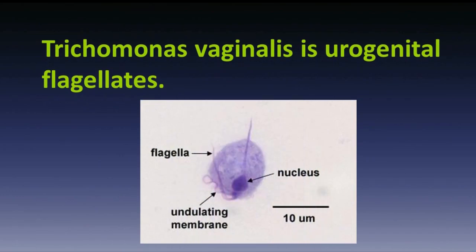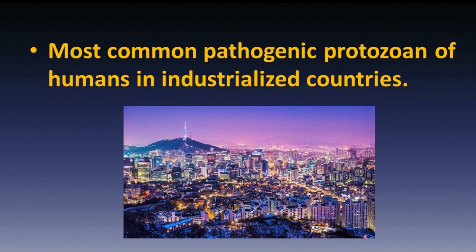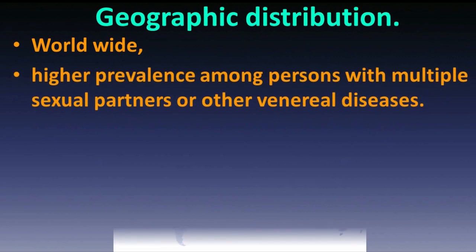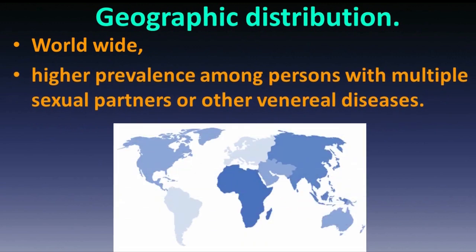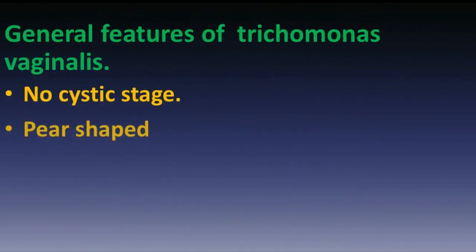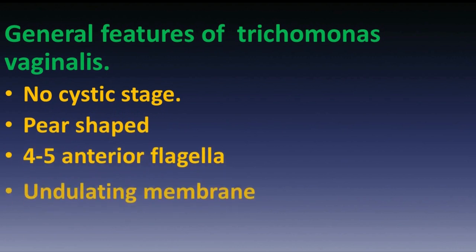Trichomonas vaginalis is the most common pathogenic protozoan of humans in industrialized countries, with worldwide geographic distribution. Higher prevalence is found among persons with multiple sexual partners or other venereal diseases.